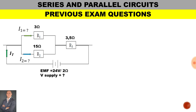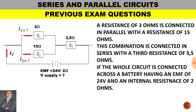Here's another exam-type question for a series and parallel combination. A resistance of 3 ohms is connected in parallel with a resistance of 15 ohms. This combination is connected in series with a third resistor of 3.5 ohms. The whole circuit is connected across a battery having an EMF of 24 volts and an internal resistance of 2 ohms.